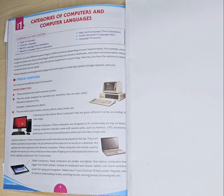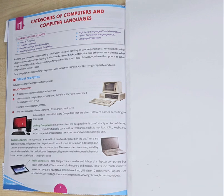The first category under micro computers is the desktop computer. Desktop computers are designed to fit comfortably on top of a desk, which is why they are called desktop computers. They come with several units such as a monitor, keyboard, CPU, and mouse, and all these components are interconnected to form a single unit.